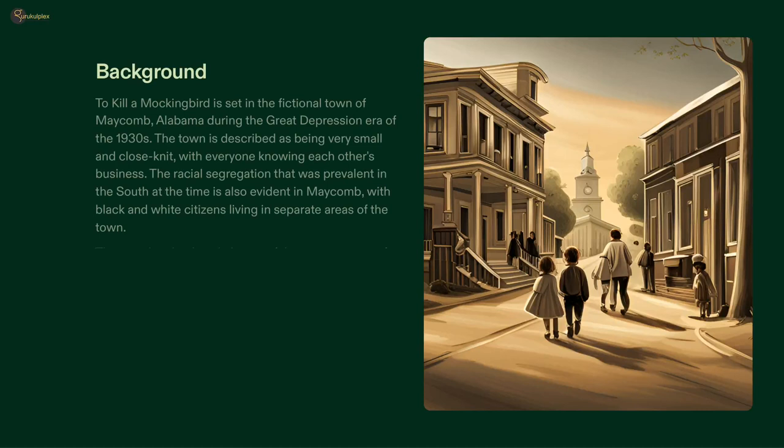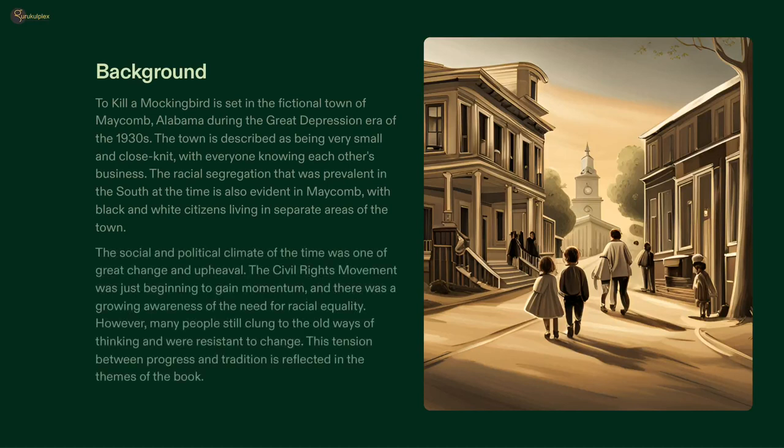The background of To Kill a Mockingbird: it takes place in the fictional town of Maycomb, Alabama during the Great Depression. The town is small and close-knit, but the deep racial segregation of the South is still present. At the same time, the civil rights movement was beginning to gain ground, leading to a tension between progress and tradition, which is reflected in the themes of the novel.